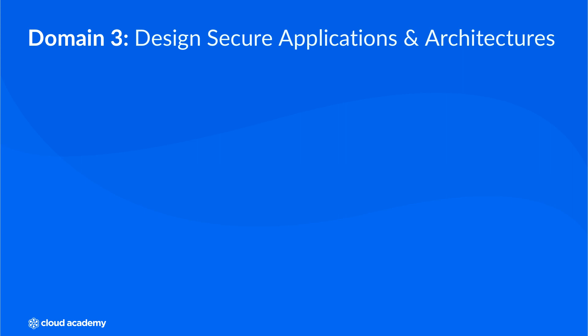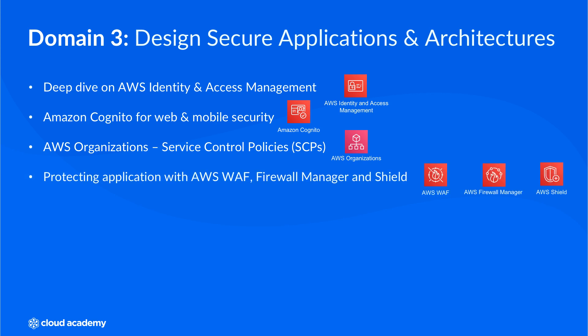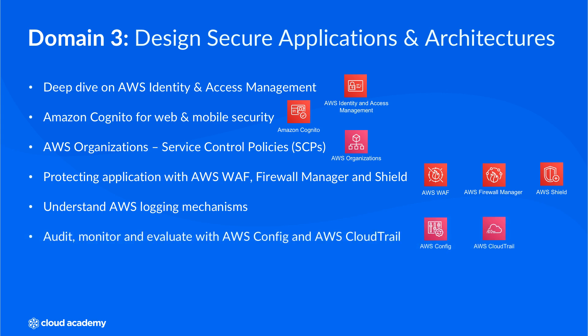We have content to help you understand all of these areas and elements, and one of the main services that you'll need to know is AWS Identity and Access Management, known as IAM. So we cover this in some detail, which also covers federated access. You'll also be introduced to Amazon Cognito, as well as AWS Organizations, in particular the service control policies that this service offers. From an application security standpoint, we focus on the AWS Web Application Firewall, with an introduction to Firewall Manager and Shield. Logging is also a crucial element of application security, and you'll learn how to enable logging and use it to your advantage. You'll understand how services such as AWS Config and AWS CloudTrail can be used to help you audit, monitor, and evaluate your infrastructure for security issues and incidents to help you resolve threats quicker and more effectively.